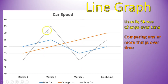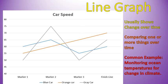At marker 2, the gray car was going the fastest. And at the finish line, who was traveling the fastest? This doesn't say who won, it just says how fast they were going. So again, it's just showing change over time. One common example, often seen in the news, is monitoring ocean temperatures for change in climate — measuring temperature change over time. That's a common use of a line graph.